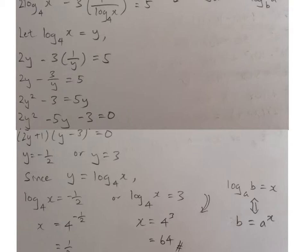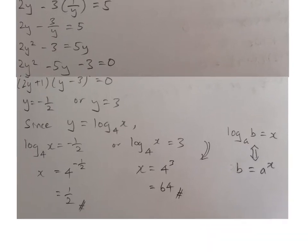What did I do here? This is actually the logarithmic form. I change it back to my index form. Can you see that I have b equals to a to the power of x. So in this case, x will be equals to 4 to the power of negative half.